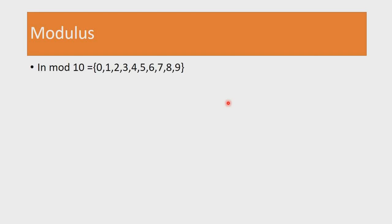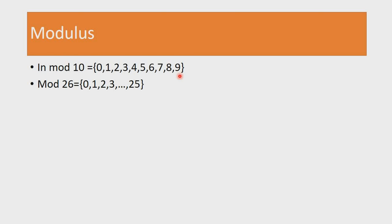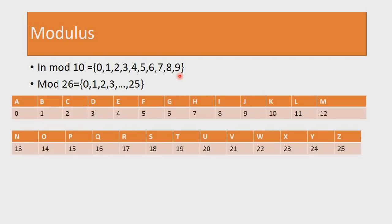In mod 10, the elements are simply 0, 1, 2, 3, all the way up to 9, which means mod 10 is the set of all non-negative integers less than 10. In the same way, mod 26 is the set of all non-negative integers less than 26 — meaning all integers from 0 up to 25. When dealing with the Julius Caesar cipher, since we're working with the 26 letters of the alphabet, we use mod 26 as our encoding mechanism.